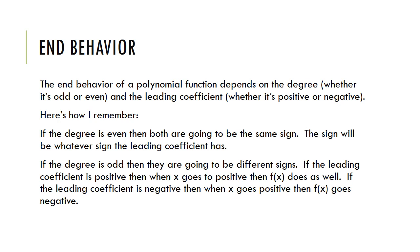End behavior is a little trickier to read from the function than from the graph, but you have to look at two things: first, the degree — whether it's odd or even — and then the leading coefficient — whether it's positive or negative. If the degree is even, then f(x) is going to go towards either both positive infinity or both negative infinity. The sign depends on the leading coefficient. If the degree is even and the leading coefficient is positive, then both ends go to positive infinity. If the degree is even and the leading coefficient is negative, then both ends go to negative infinity.